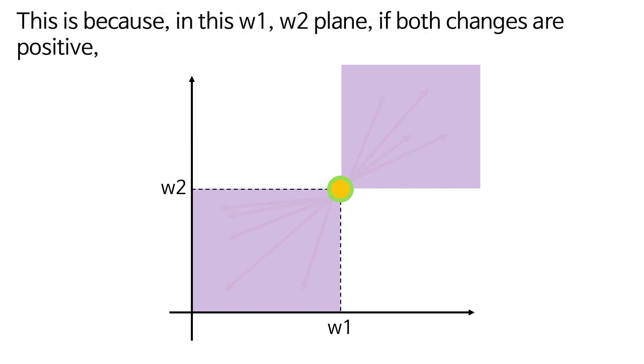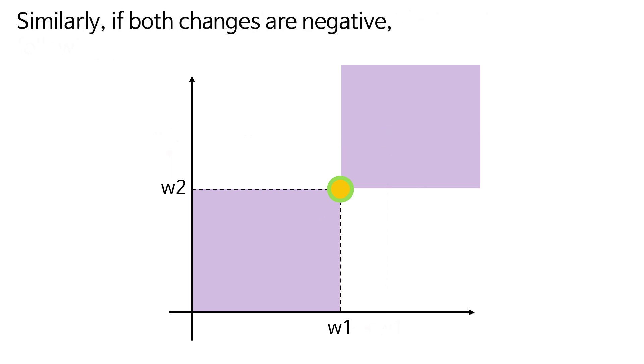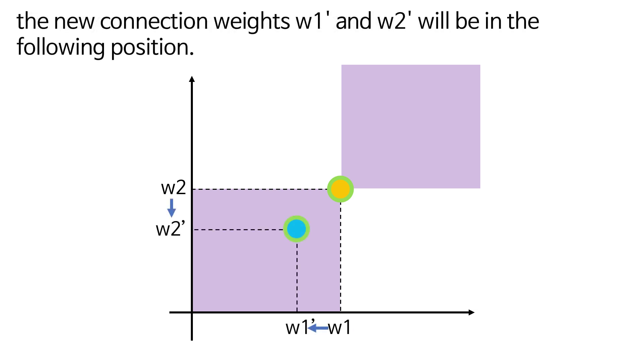This is because in this W1, W2 plane, if both changes are positive, the new connection weights W1' and W2' will be in the following position. Similarly, if both changes are negative, the new connection weights W1' and W2' will be in the following position.